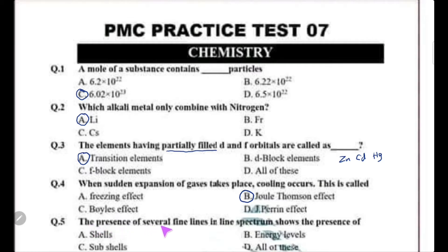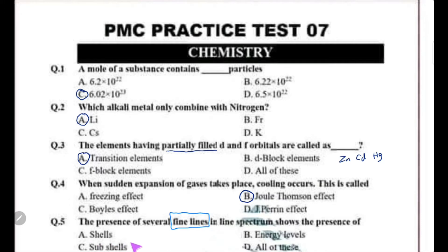The presence of several fine lines in the inline spectrum shows the presence of sub-shells. If we look at a high-resolution spectrometer, or consider the Zeeman effect or Stark effect, the fine lines are because of sub-shells. So sub-shell is the correct choice.